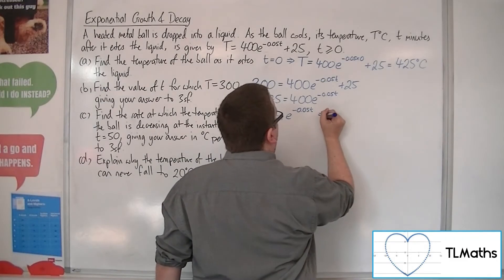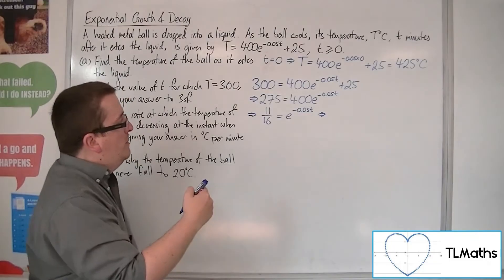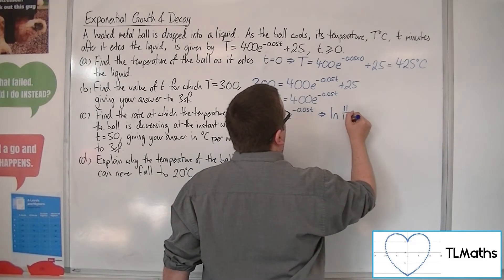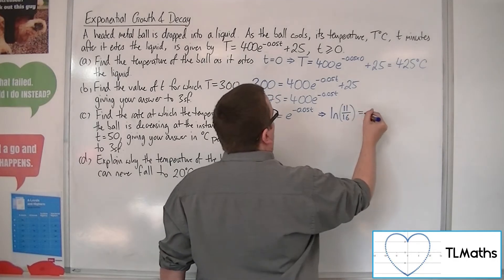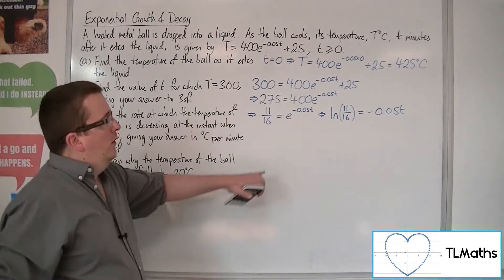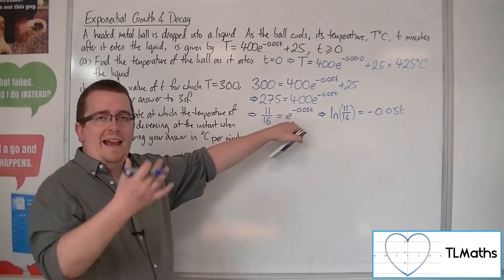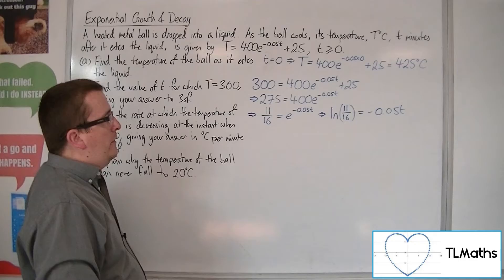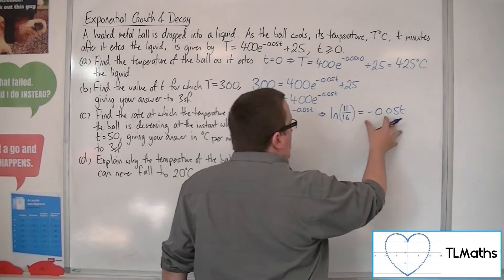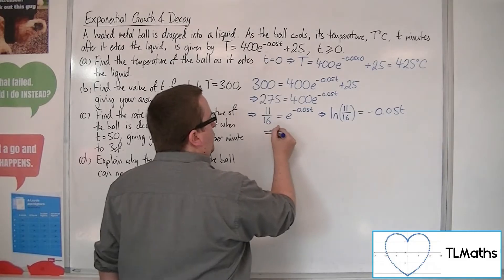You then want to log both sides, natural log of both sides, to go from exponential to logarithmic form. So, natural log of 11 sixteenths is equal to minus 0.05T, because when you log the right-hand side, the LN and the E will cancel one another out as their inverse functions. Now, at this stage, you can divide both sides by the minus 0.05T.